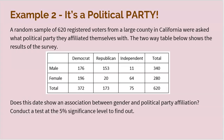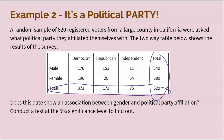A random sample of 620 registered voters from a large county in California — notice this is one sample — were asked their political party affiliation, and their gender was also noted. So we have gender on the left and political party across the top, with marginal totals on the outside and observed values on the inside. The question asks: does this data show an association between gender and political party affiliation? The word 'association' instantly tells you this is a test of independence. Conduct the test at the 5% level.